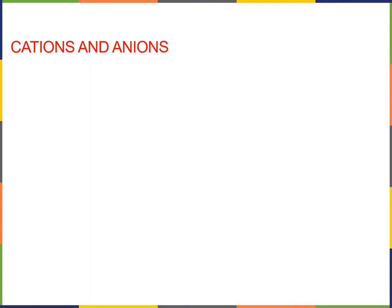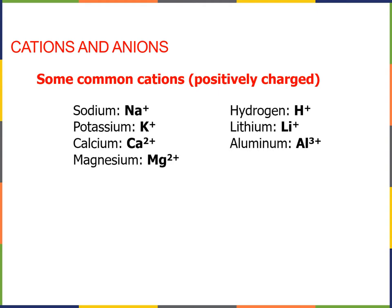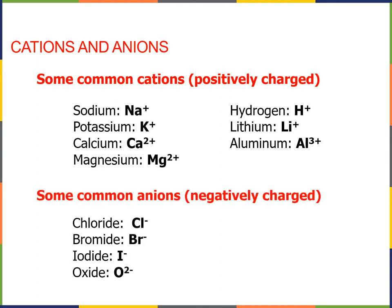So some common cations and anions, some common cations here are as follows: sodium, potassium, calcium, and so on. And some common anions are as follows.